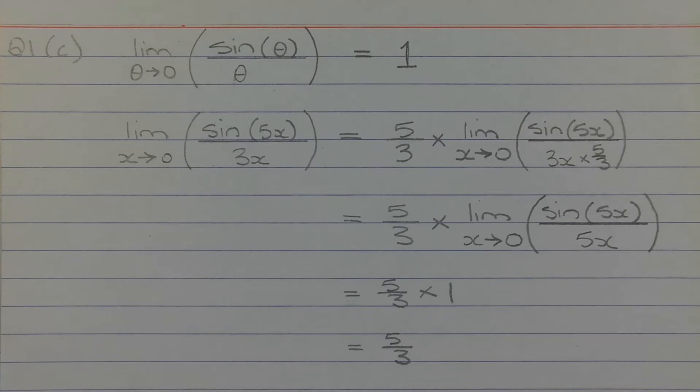Now in this particular limit, we have the limit as x approaches 0 of sine 5x over 3x. So we want the denominator to be 5x.